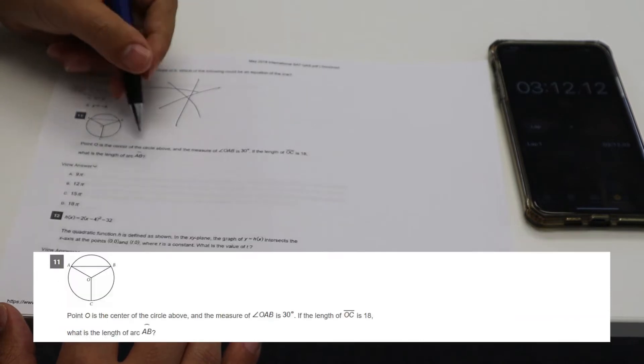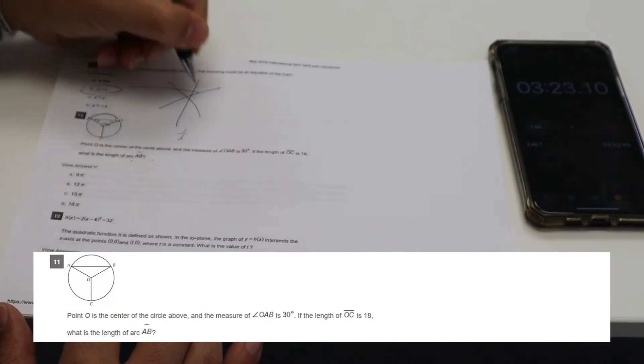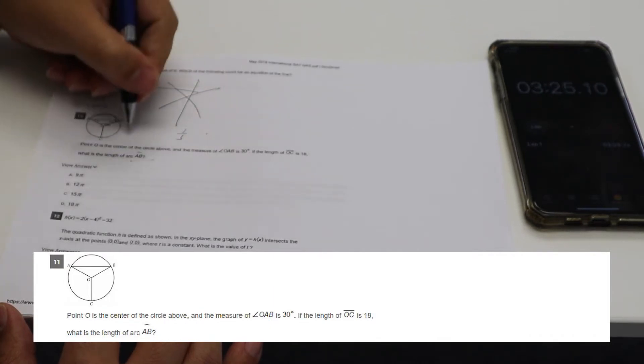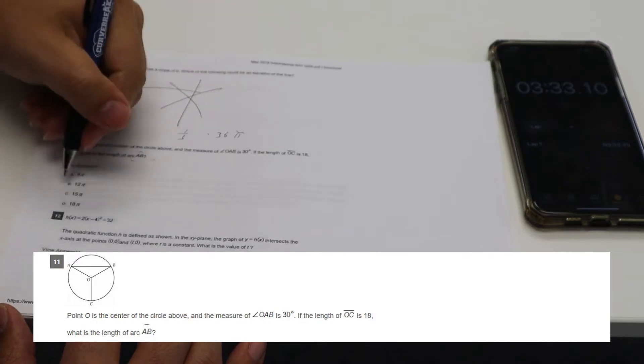Okay. Good. Oh, it's not a circle. Oh, AB. This is 30. These are radii. That's 30. This is 120. So AB is going to be one third times the circumference. OC is 18. So circumference is 2 pi R. So 36 pi times a third would be 12 pi.